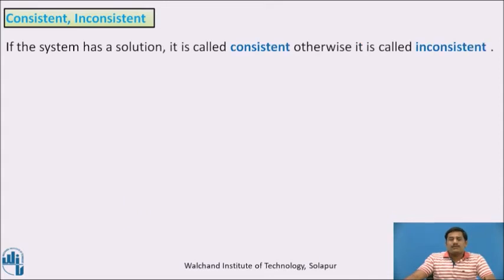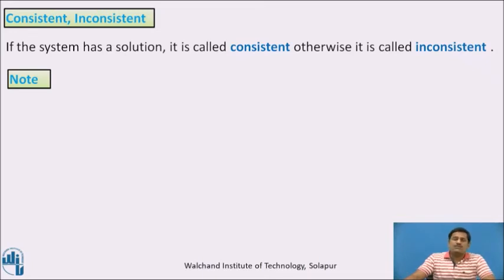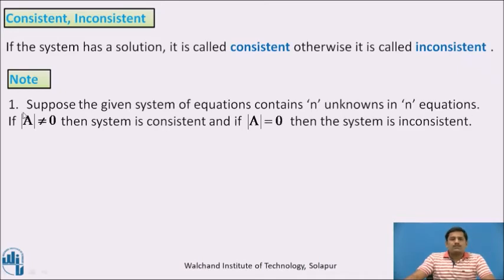Consistent and inconsistent: If the system has a solution, then the given system is consistent. Otherwise, the given system is inconsistent. Note: Suppose the given system contains n unknowns in n equations. If the determinant of the coefficient matrix A is not equal to zero, then the system is always consistent.